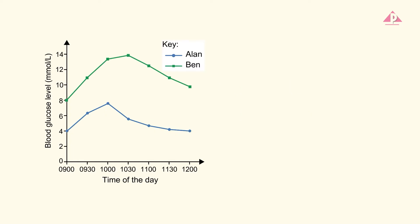Let's look at the changes in the blood glucose level of one more person. Ben is diabetic. He had fasted for 12 hours and then drank a glucose solution. The glucose solution was of equal concentration and volume as the one Alan drank.